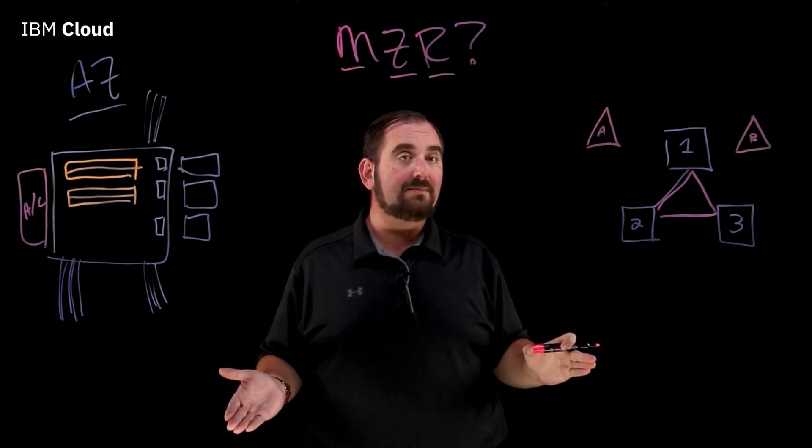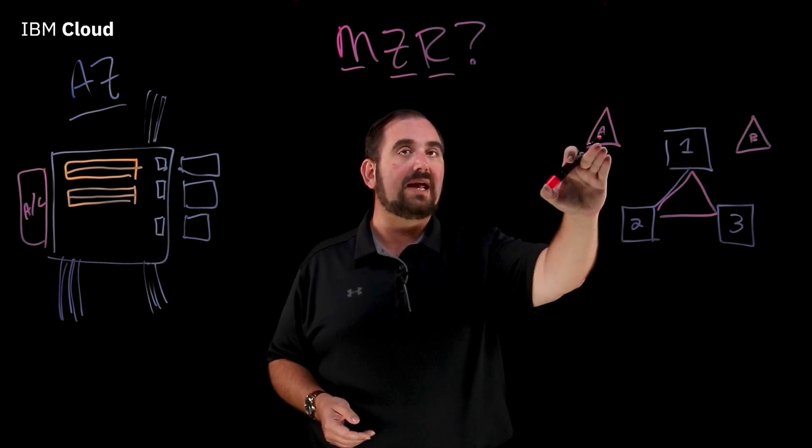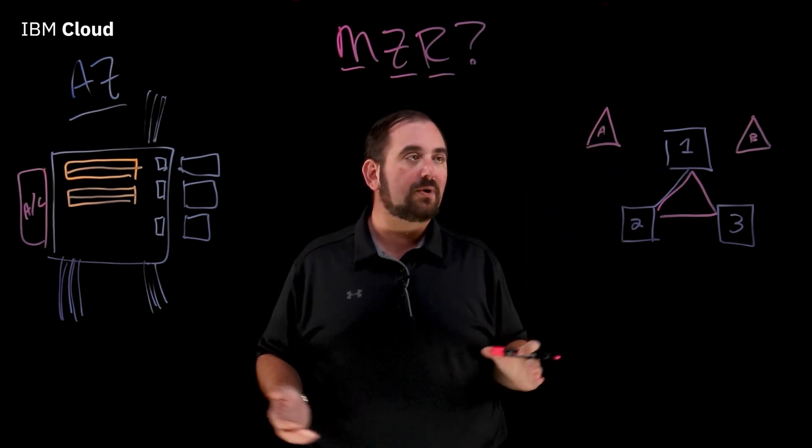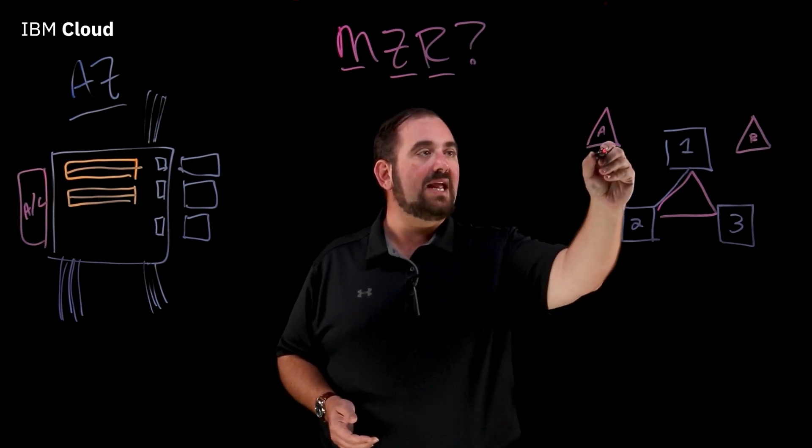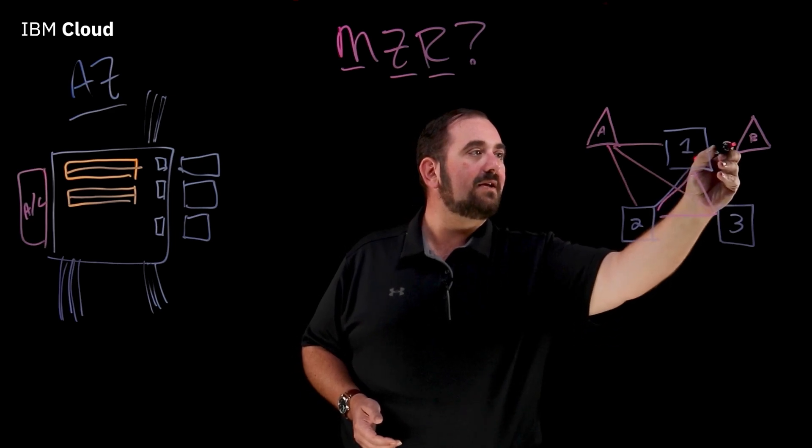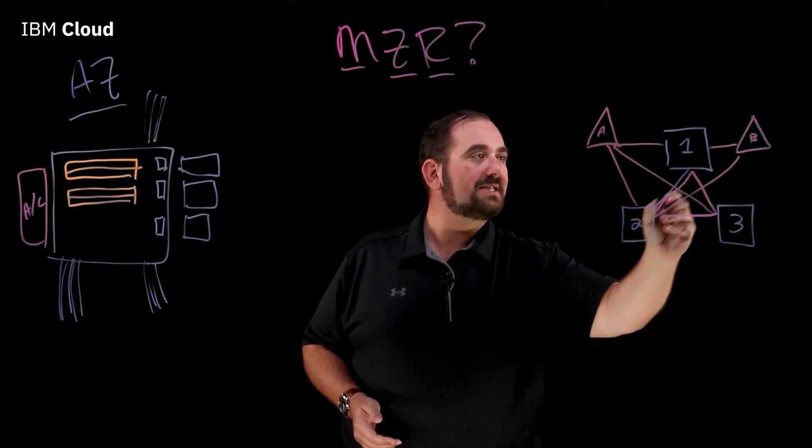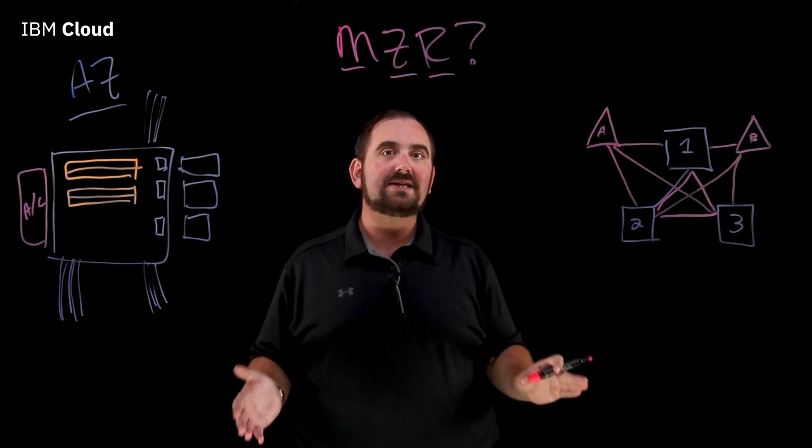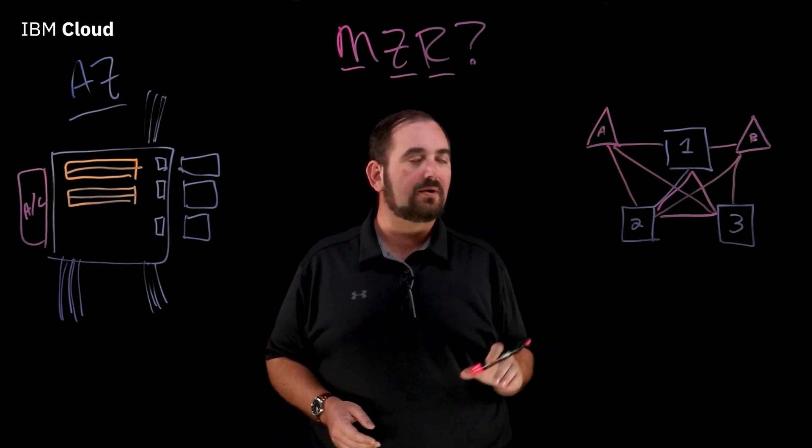Now, in some IBM Cloud MZR locations, we're going to co-locate our network hotel in with the data center and other ones, they're disparate. But each of these locations is also going to be fully interconnected with the data centers. Because again, we have to have as much redundancy as possible. We don't want any single problem to take out a workload.